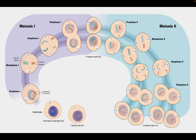In a nutshell, meiosis looks a lot like mitosis. There's prophase, there's metaphase, there's anaphase, there's telophase, and then there's cytokinesis, but there are two rounds of it.